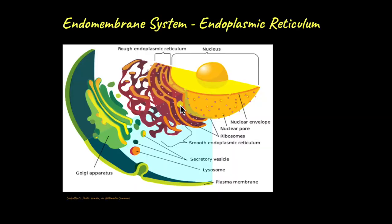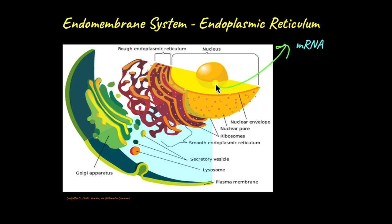Let's start with the nucleus. When we talk about the protein synthesis process, the first step happens inside the nucleus. The nucleus contains DNA, and DNA is made up of genes. Genes are different parts of DNA that code for specific proteins — they contain the information or recipe needed to make proteins. From DNA, specifically from genes, a molecule called mRNA is synthesized.